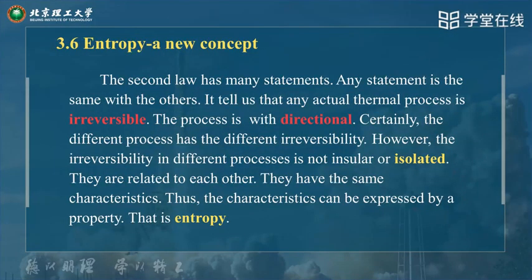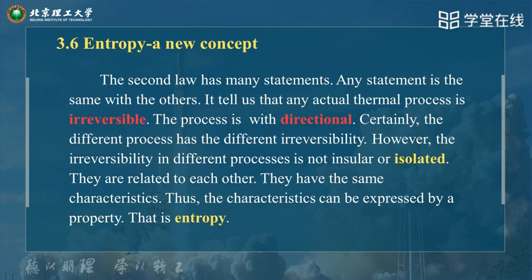The second law has many statements. Any statement is equivalent to each other. It tells us any active thermal process is irreversible — the process is directional. The different processes have different irreversibilities, but the irreversibility in different processes is not isolated; they are related and share the same characteristics. Therefore, these characteristics can be expressed by a property or state parameter. That's entropy.